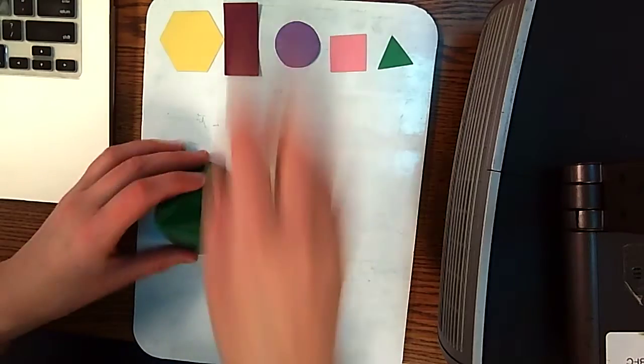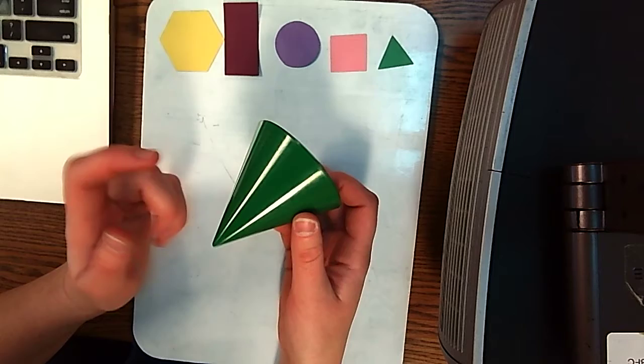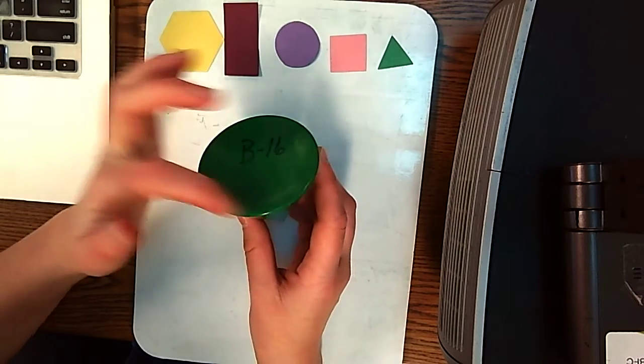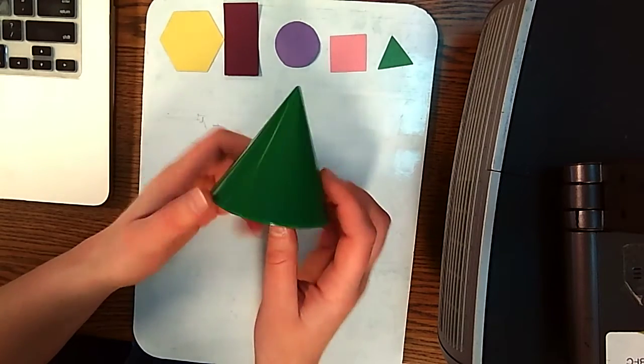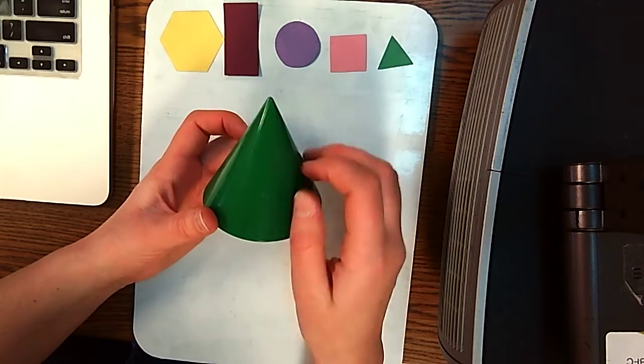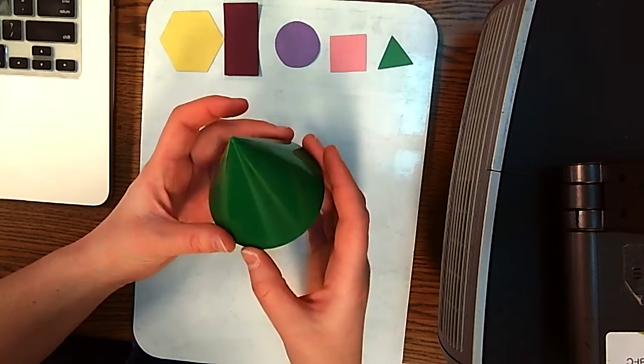So I want you to take a moment and look around your house and see if you find any cones. A cone has a circle base. It comes up like this. Where it's smooth and it comes to one point at the top.